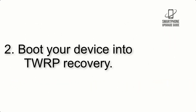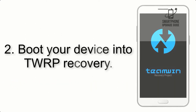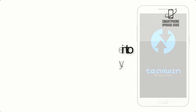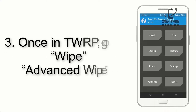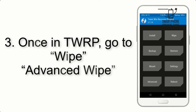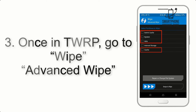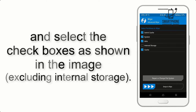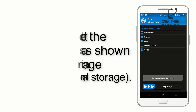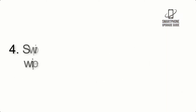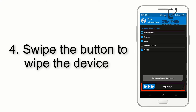Step 2: Boot your device into TWRP Recovery. Once in TWRP, click on Wipe, then Advanced Wipe, and select the checkboxes as shown in the image, excluding internal storage. Step 4: Swipe the button to wipe the device.